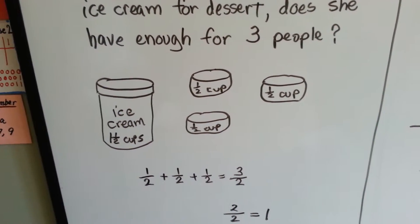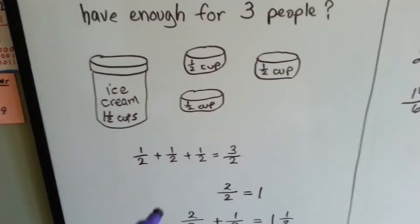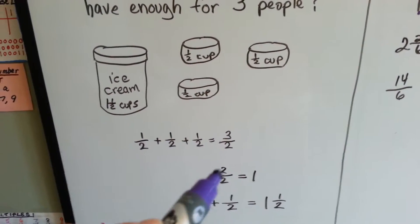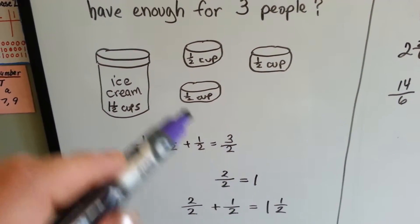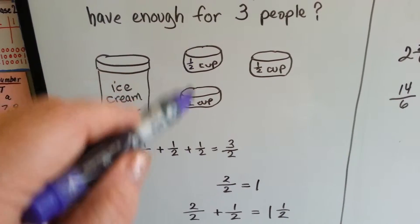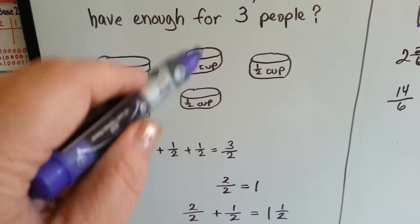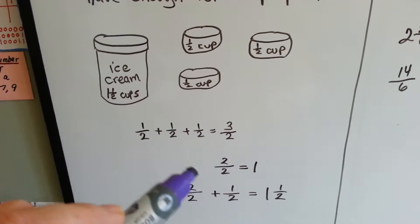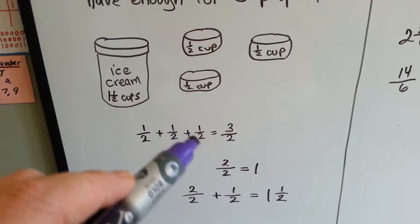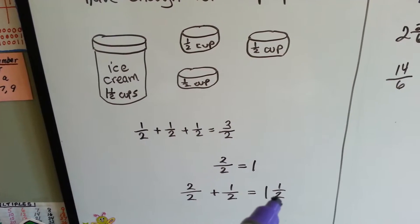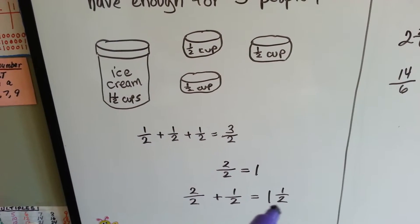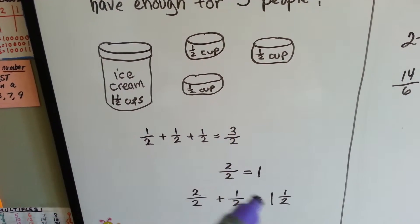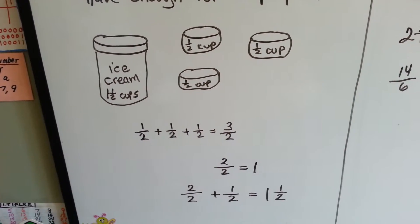One plus one plus one is three. Two of the twos is equal to one whole — that would be one whole. And then she would have the little half cup left over, and that would be one and a half. So three halves is equal to one and a half.